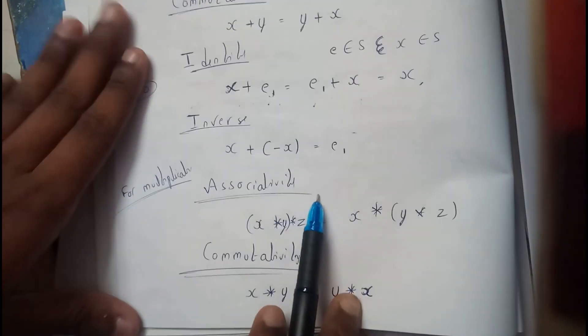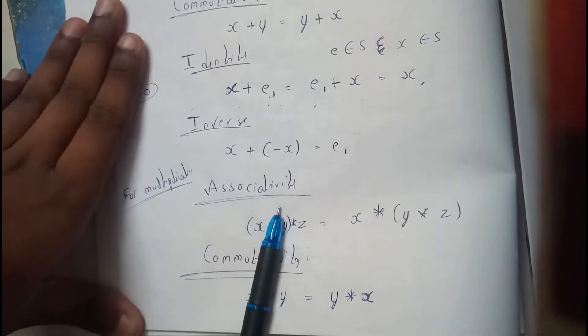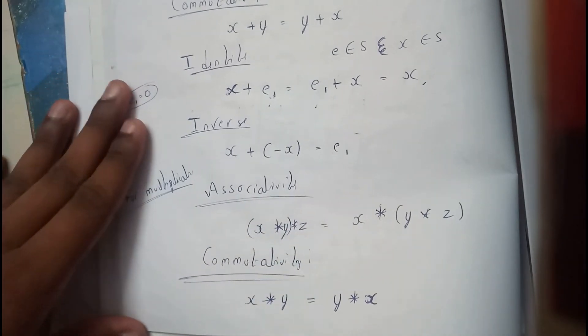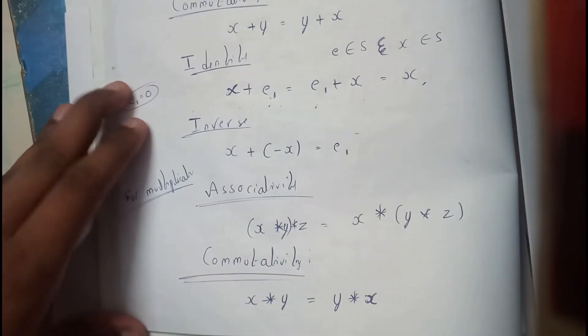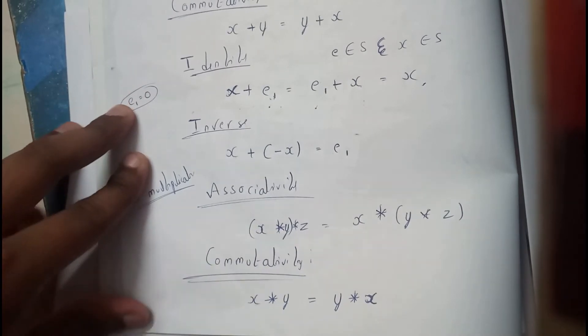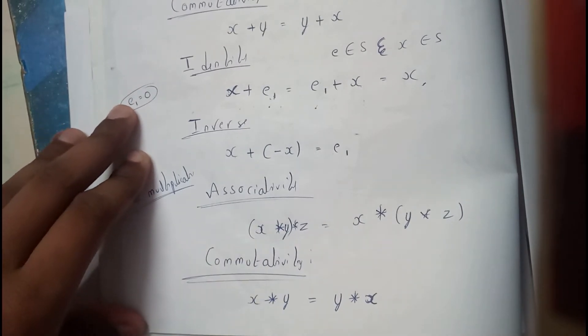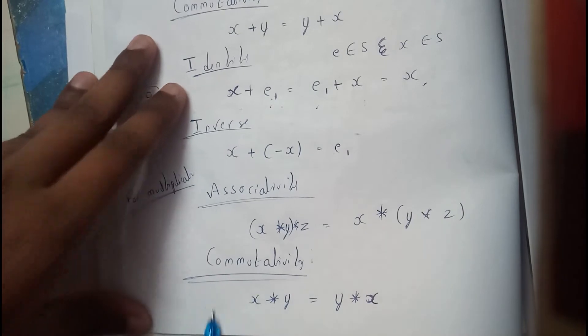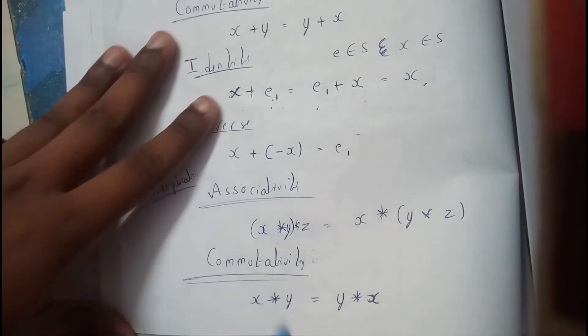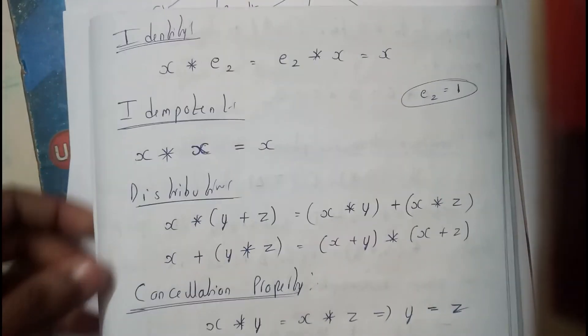Now we'll go through the multiplication properties. Associative again: x * (y * z) equals (x * y) * z. Commutative: x * y equals y * x.